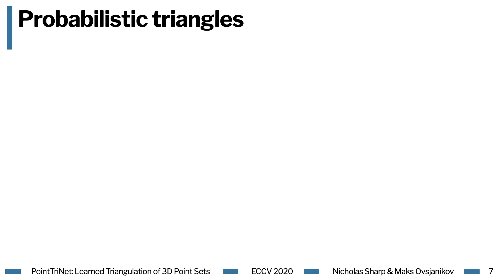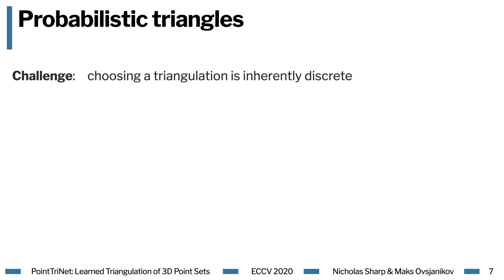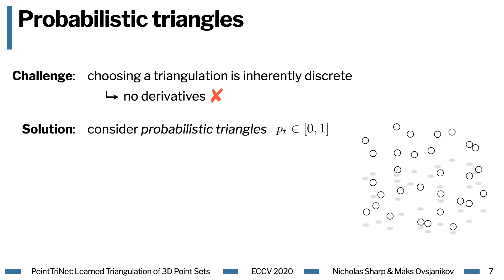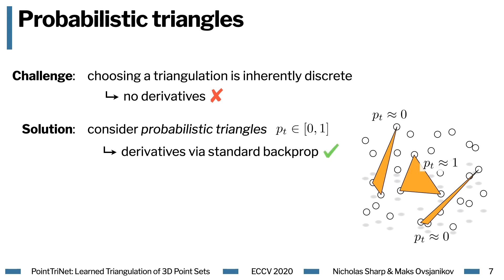One of the key challenges of this problem is that choosing a set of triangles is inherently a discrete operation without smooth derivatives, preventing the use of gradient-based techniques. Our solution is to model the problem via a probabilistic mesh, where we associate some probability with each generated triangle. Good triangles which should definitely appear have a probability near 1, whereas unwanted triangles get a probability near 0. Working with this fuzzy, probabilistic surface allows us to formulate losses and train our networks with standard backpropagation.